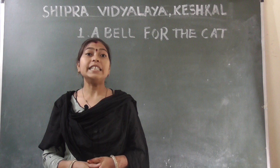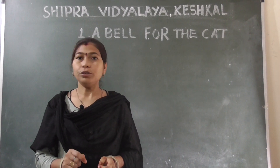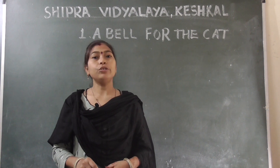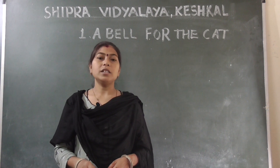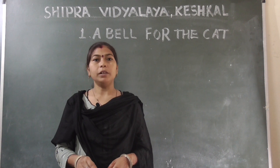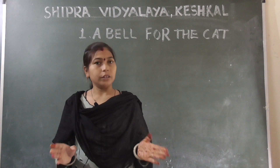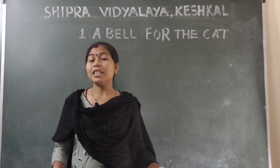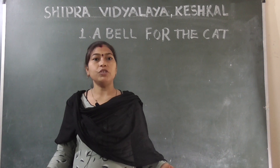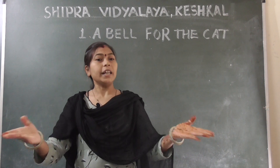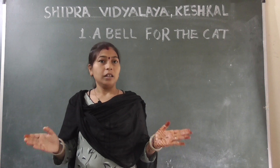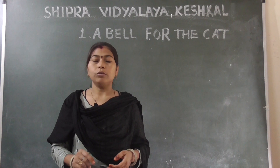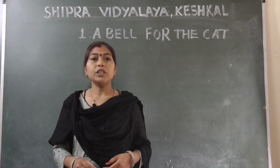A Bell for the Cat is a fable. Do you know the meaning of the word fable? Fable means short story. There are few characters and events in a fable. Fable mein do-chaar charitra hoti hai. Whereas a long story has many characters and events — jabki lambi kahani mein bohot saare characters aur bohot saare events hoti hai.